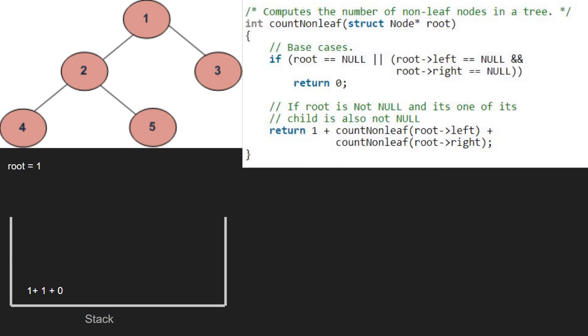Finally, we return 1 plus 1 that is equal to 2 which is the count of non-leaf nodes in this binary tree.